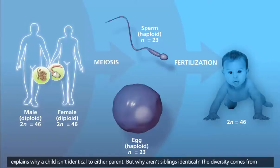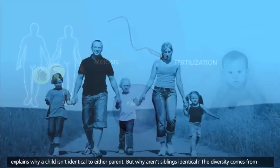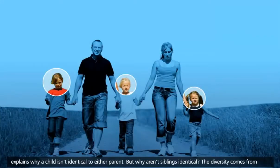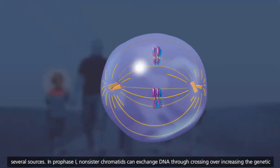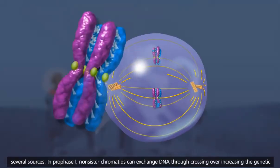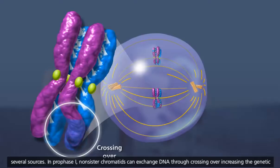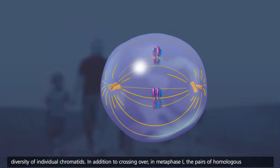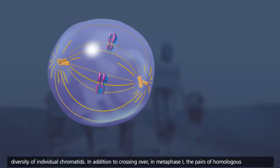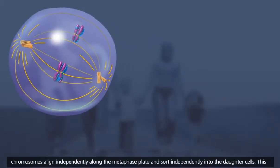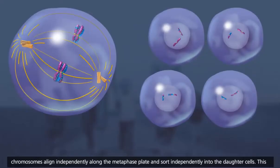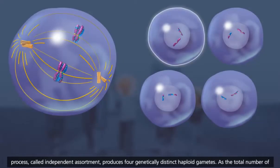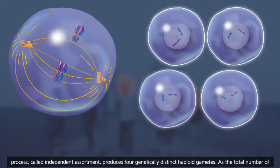This explains why a child isn't identical to either parent. But why aren't siblings identical? The diversity comes from several sources. In prophase I, non-sister chromatids can exchange DNA through crossing over, increasing the genetic diversity of individual chromatids. In addition to crossing over, in metaphase I, the pairs of homologous chromosomes align independently along the metaphase plate and sort independently into the daughter cells. This process, called independent assortment, produces four genetically distinct haploid gametes.